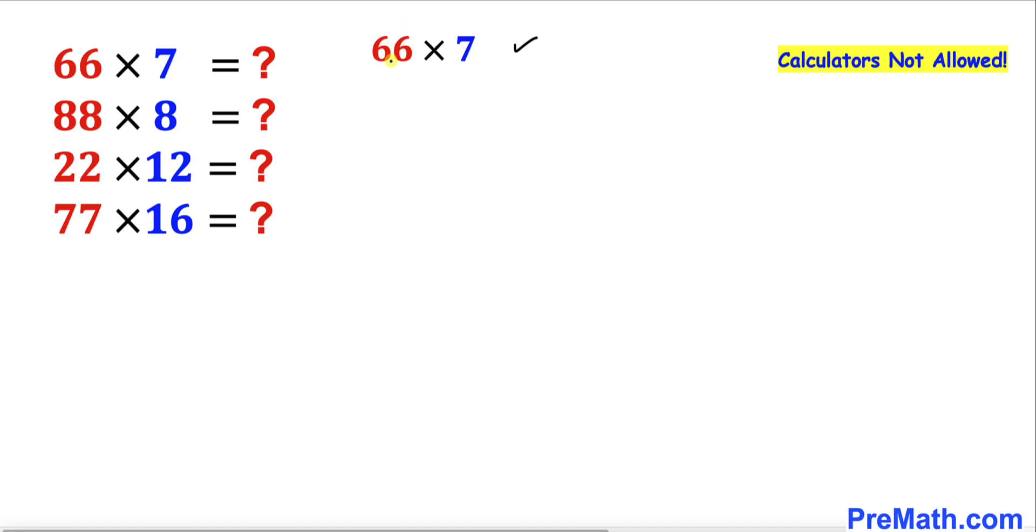Let's focus on this 6 only, so I'm going to multiply 6 times 7 that is going to give us 42. The next step is let's add these two numbers 4 plus 2 is 6. I'm going to put down 6 in the middle so our answer turns out to be 462 and here's our next example 88 times 8.